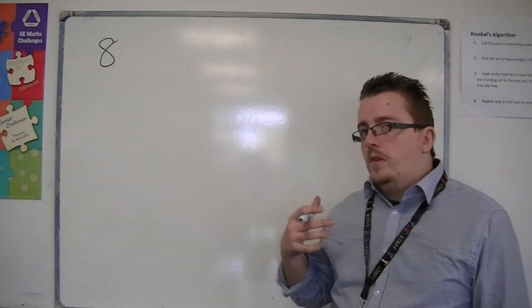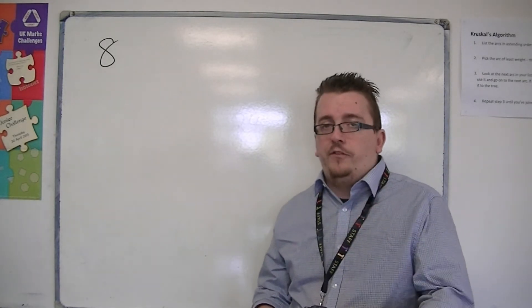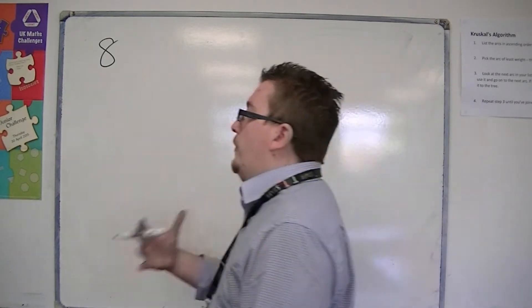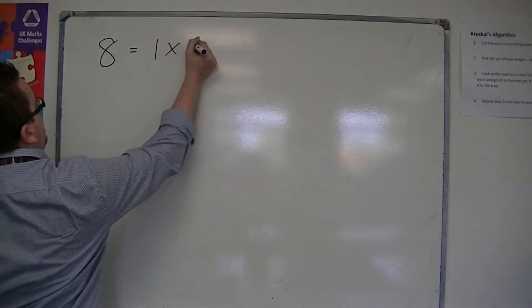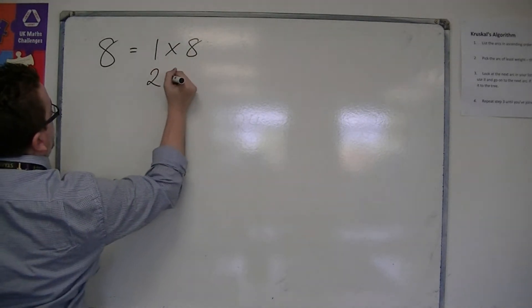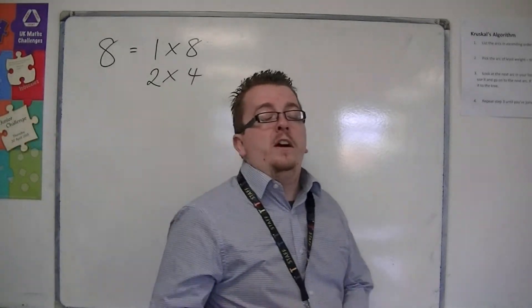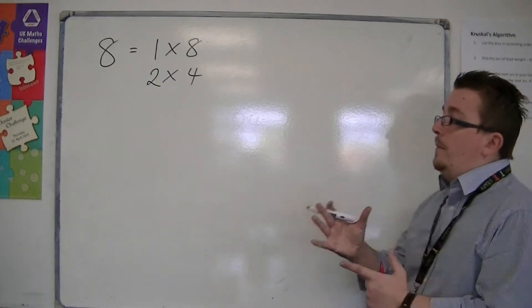Now, the best way to really set this out is to look for pairs of numbers that multiply together to make 8. So, for example, we would have 1 times 8 would make 8, and 2 times 4. Notice how I'm looking for whole numbers. I'm not looking for decimals, just whole numbers.